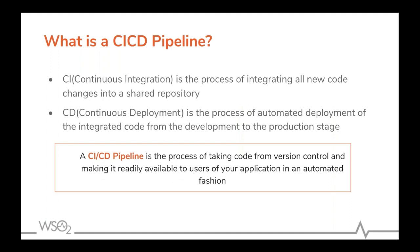Continuous integration is the process of converting source code into deployable artifacts, while continuous deployment is the process of deploying those artifacts into different environments. A CI/CD pipeline is an end-to-end process that does both continuous integration and continuous deployment.